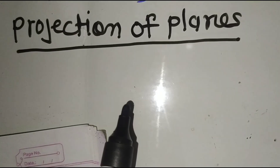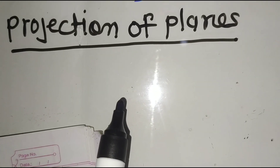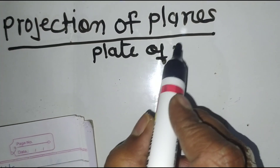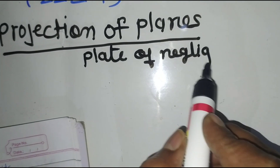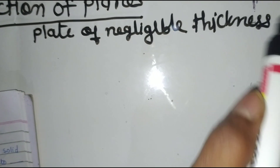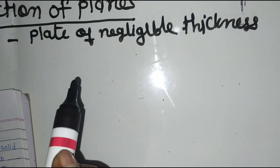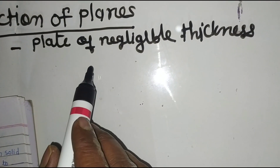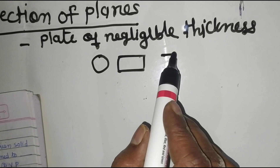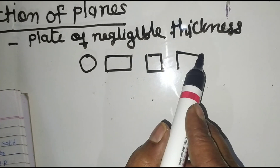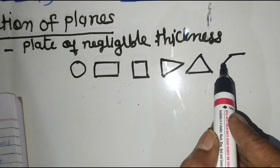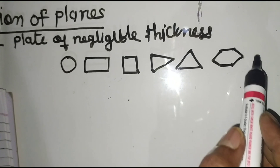Now we will have a discussion on the projection of planes. Planes means a plate of negligible thickness. Examples of planes include circular plates, rectangular plates, square plates, triangular plates, hexagonal plates, and pentagonal plates.